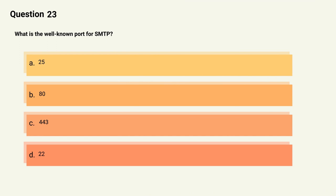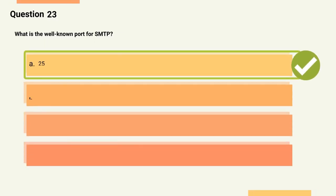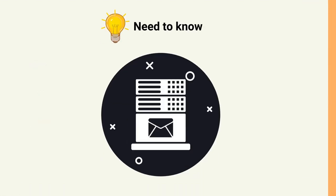Question 23: What is the well-known port for SMTP? Options: A) 25, B) 80, C) 443, D) 22. The correct answer is Option A, 25. Explanation: Port 25 is the well-known port used by the SMTP protocol for sending email.